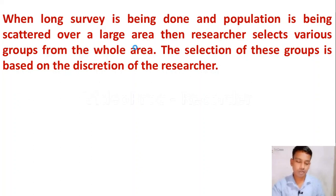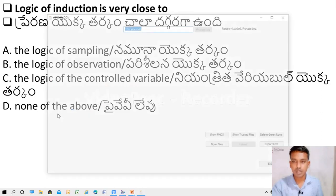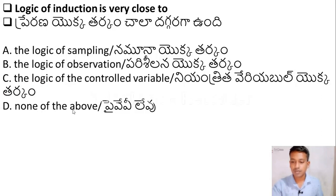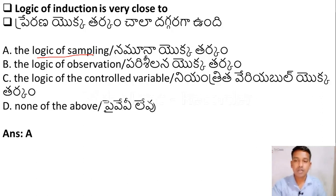The next question: the logic of induction is very close to — Option A: The logic of sampling, Option B: The logic of observation, Option C: The logic of the control variable, Option D: None of the above. The right answer is Option A — the logic of sampling. Please remember: the logic of induction is very close to the logic of sampling.